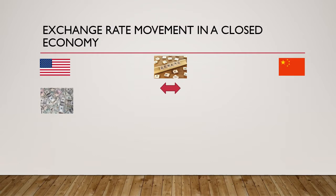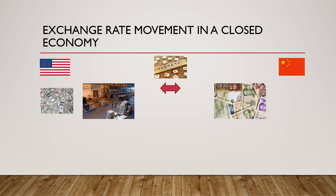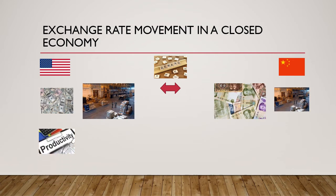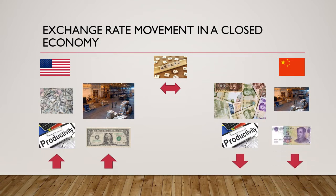Let's say that lesser credit is required in America to produce a given amount of goods, whereas in China more credit — more money supply — is used to produce the same amount of goods. This means that the productivity of America is higher than the productivity of China, and this would imply that the exchange rate of America would be stronger compared to that of China. But this is in a closed economy.